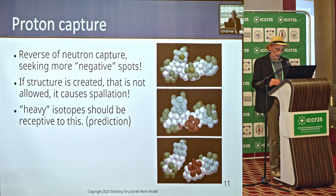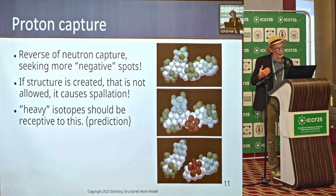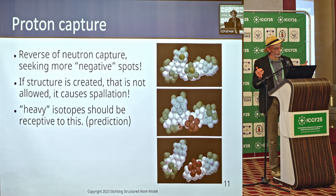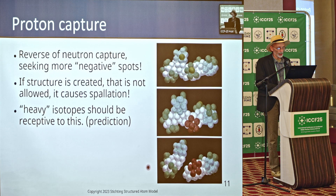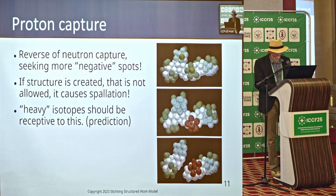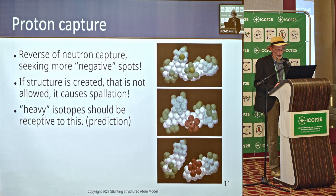What we call proton capture, or fusion of hydrogen into a metal, is kind of like the reversal of neutron capture. A neutron can land on the nucleus, but if there's already a neutron there, a proton only needs to be added. Then it works. But as we can see, this location is not structurally sound, meaning there's a response — and the response is spallation or fission. So what we're saying is that heavy isotopes should be receptive to that.